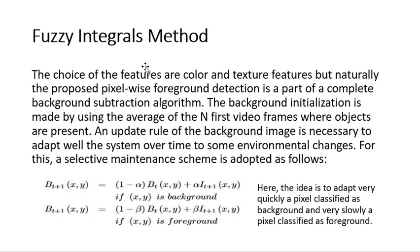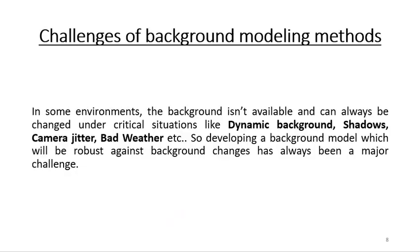The third method is the Fuzzy Integrals method. We choose color and texture features; this is a pixel-based foreground detection method. In the first step, we find the average of the first video frames, which is the background initialization. For background updating, the system adapts over time to environmental changes. In every frame, we consider each pixel to determine whether it belongs to the background or foreground.